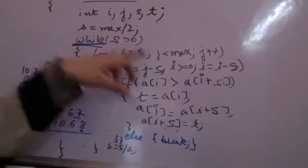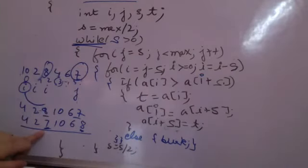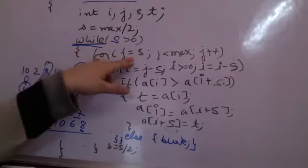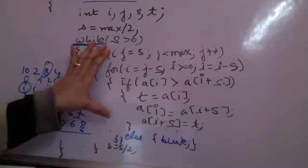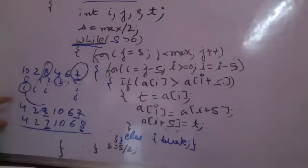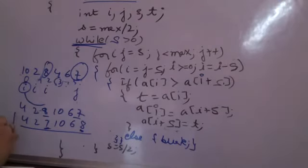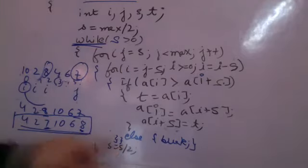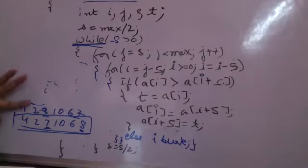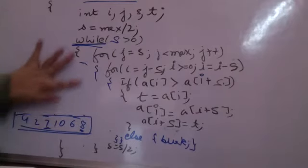When I am again going, i is i minus s. i is two here. Two minus three is again less than zero. So I will not be comparing any more elements here. I go to the outer loop. J plus plus, j becomes six. Six less than six is false. The condition becomes false. I come out of these two loops. This is my first pass of shell sort. After the first pass of shell sort, this is the array that I am having.